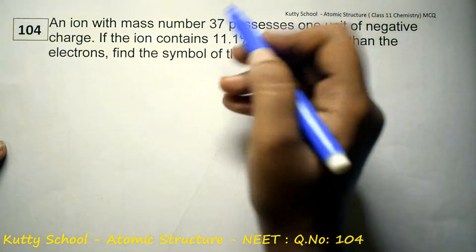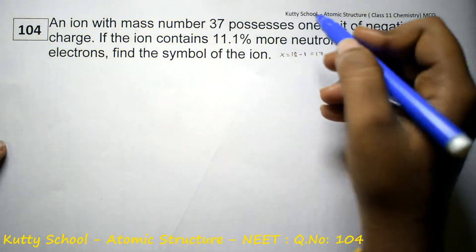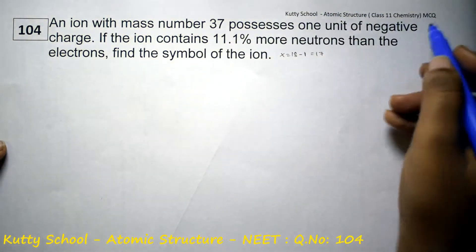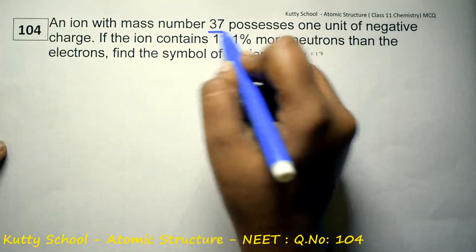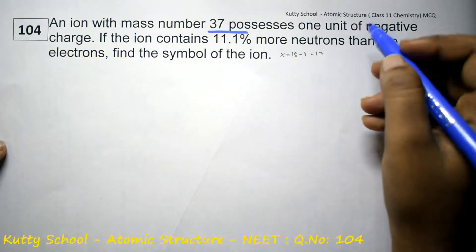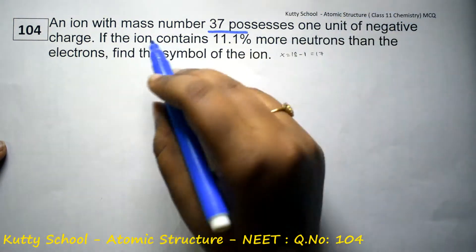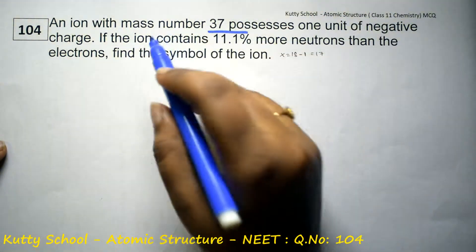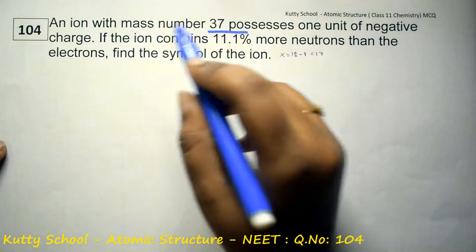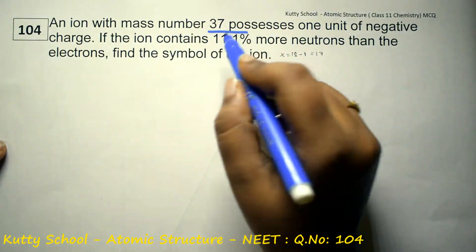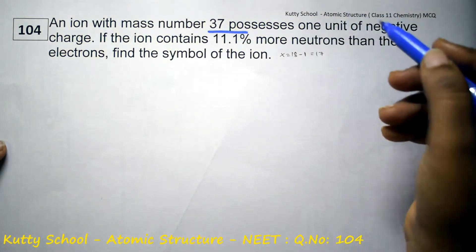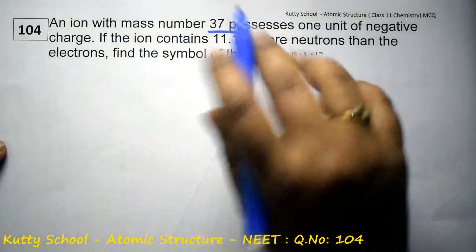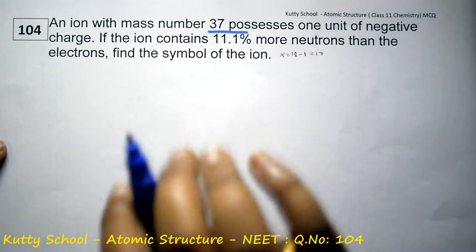An ion with mass number 37 possesses 1 unit of negative charge. The ion contains 11.11% more neutrons than electrons. Find the symbol of the ion.